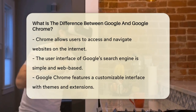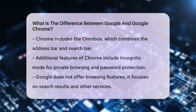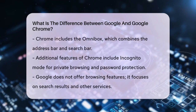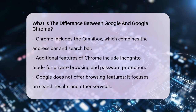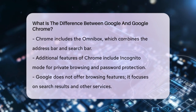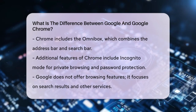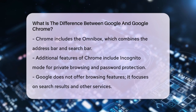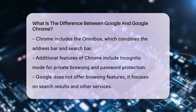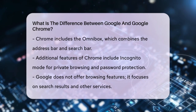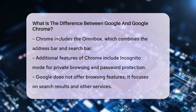When you use Chrome, you have features like the Omnibox, which combines the address bar and search bar into one. This means you can type in a URL or search for something directly from the same box. Chrome also offers features like incognito mode for private browsing, password protection, and the ability to sync your data across different devices.